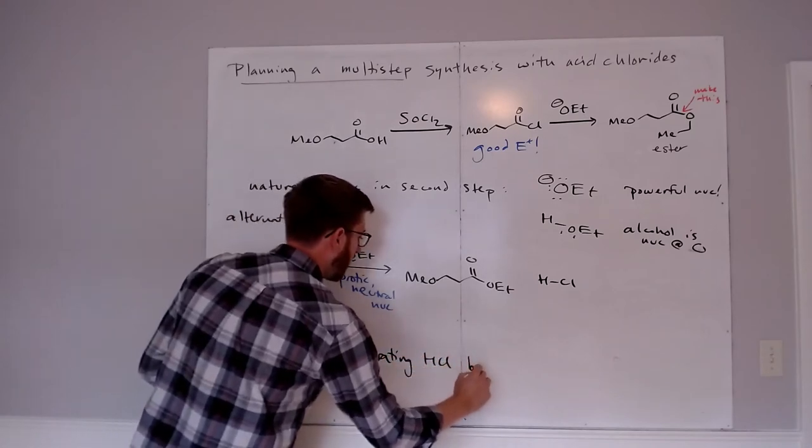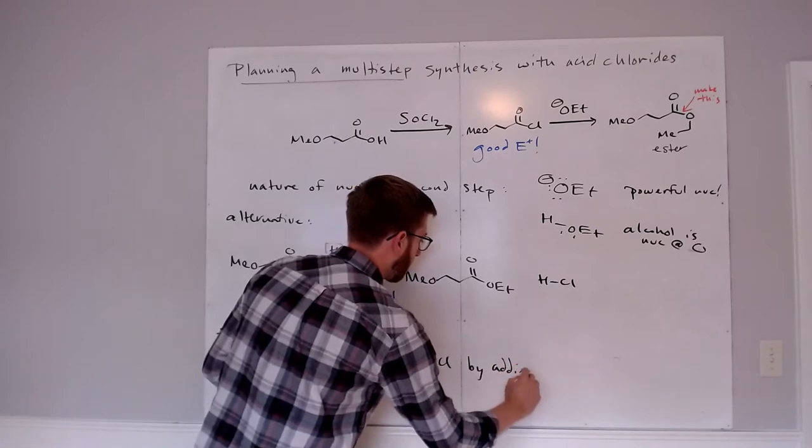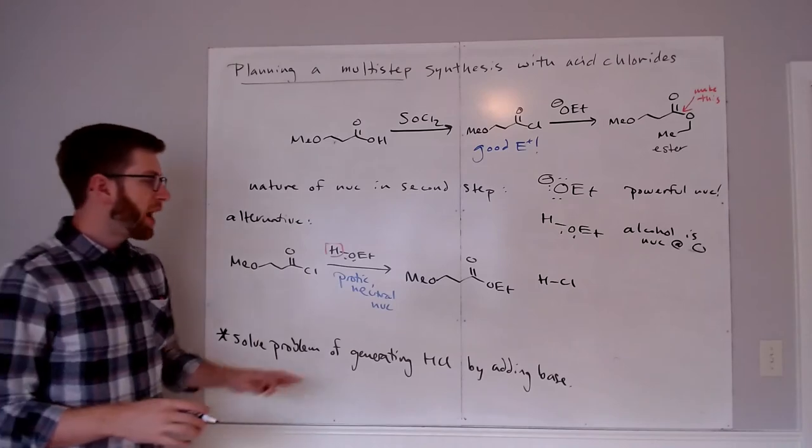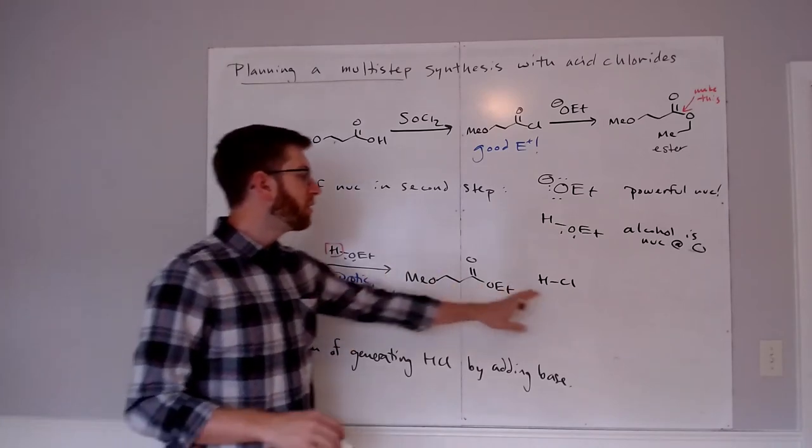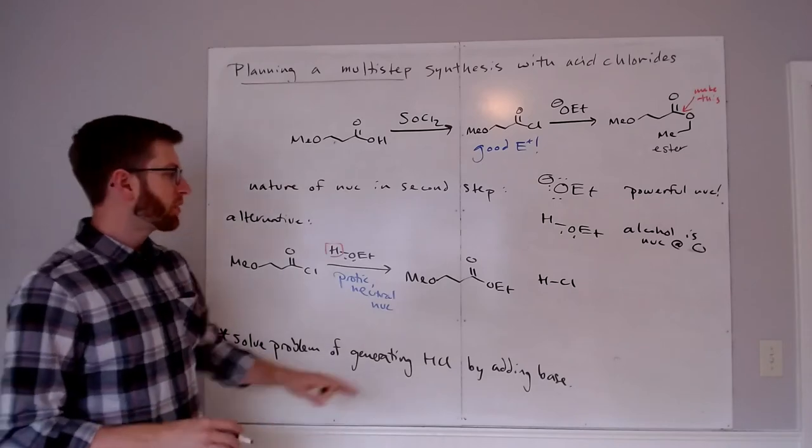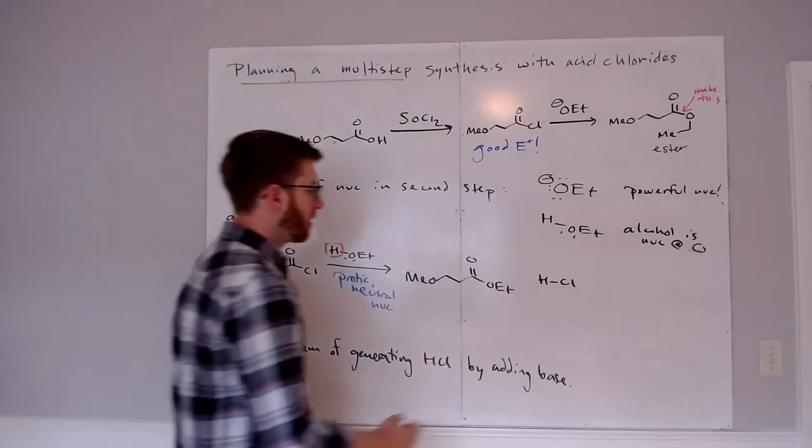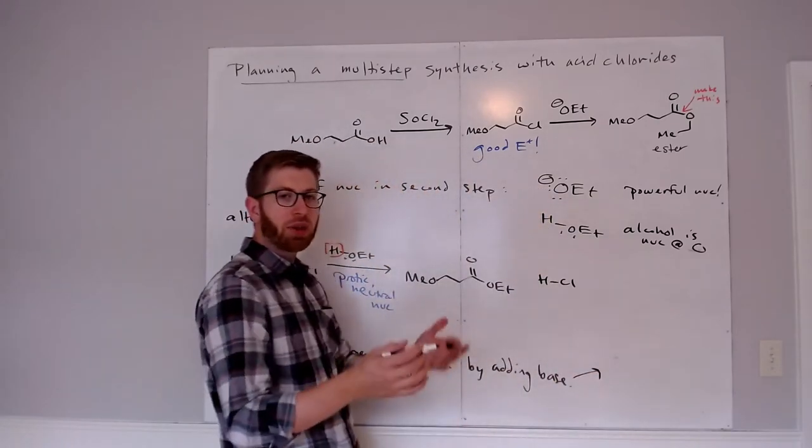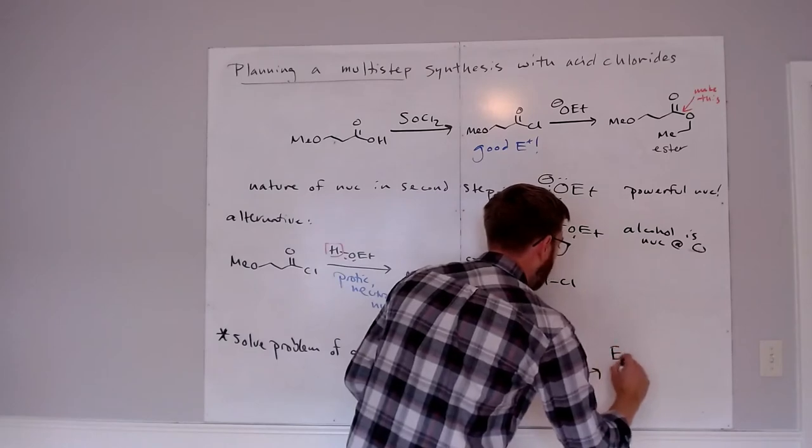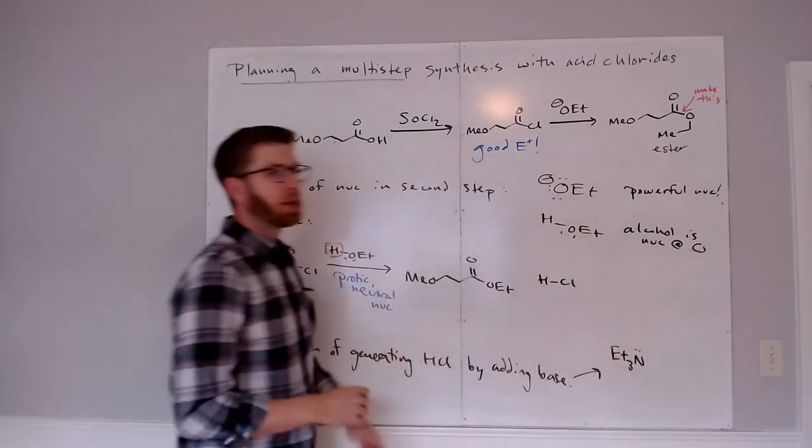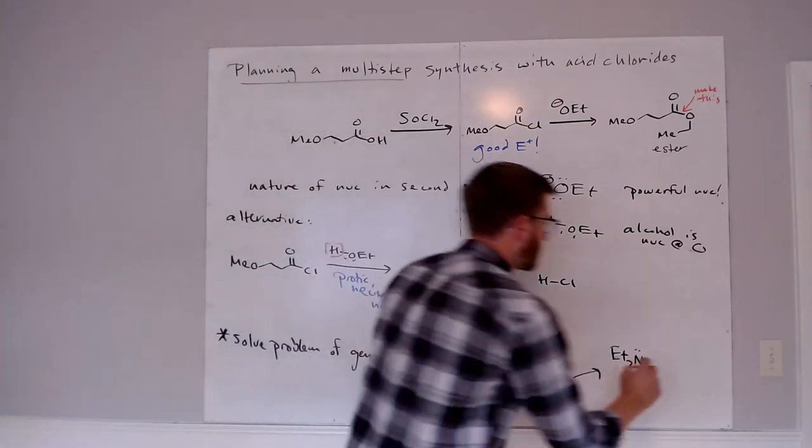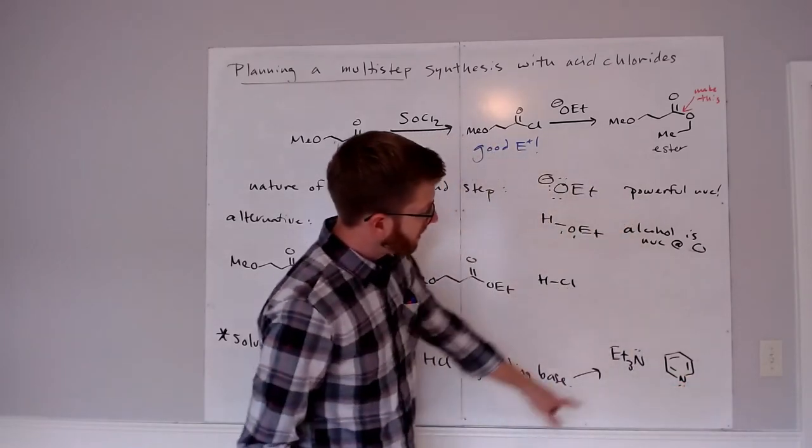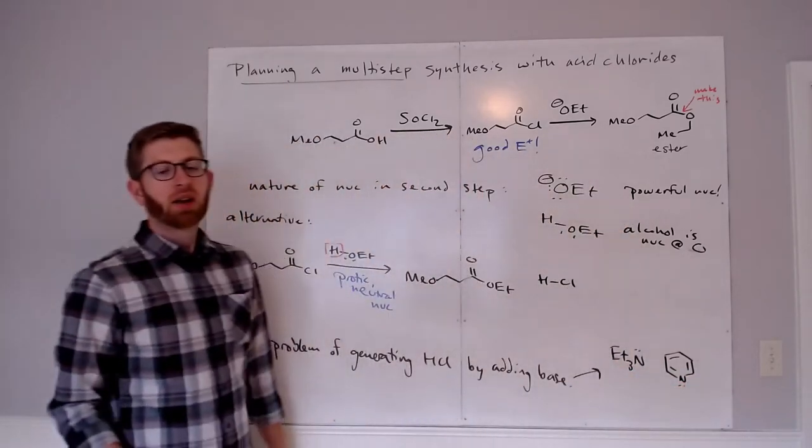To get around this, we're going to add what's called an auxiliary base. I want to be clear that adding this base does nothing for the reaction until the HCl is generated. It's only there to react with the HCl after the SNAC reaction. We typically use a couple of different bases for this. One of them is called triethylamine, so three ethyl groups attached to a nitrogen. The other is pyridine, which looks like a benzene ring where one of your vertices is a nitrogen.